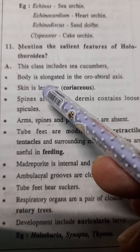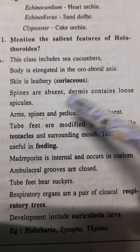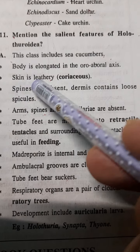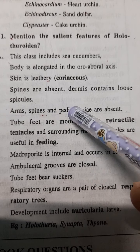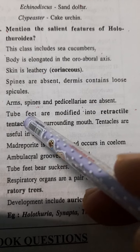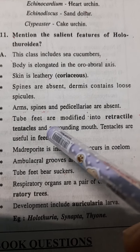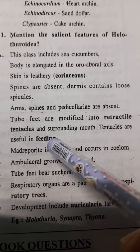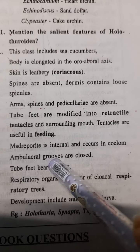Arms, spines, and pedicellaria are absent. Tube feet are modified into retractable tentacles, which are present around the mouth. These tentacles are useful in feeding. The madreporite is internal and occurs in the coelom.